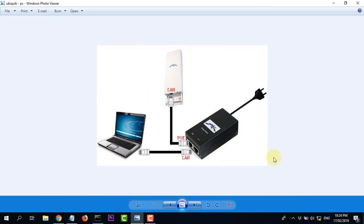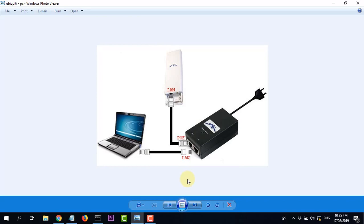Để các bạn hình dung dễ hơn về bước trước, chúng ta sẽ nhìn hình như trên. Đây là nguồn này, có cổng PoE và cổng LAN. Cổng PoE nối với Ubiquiti. Cổng LAN nối với máy tính để kết nối. Các bạn xem lại một lần nữa nhé.